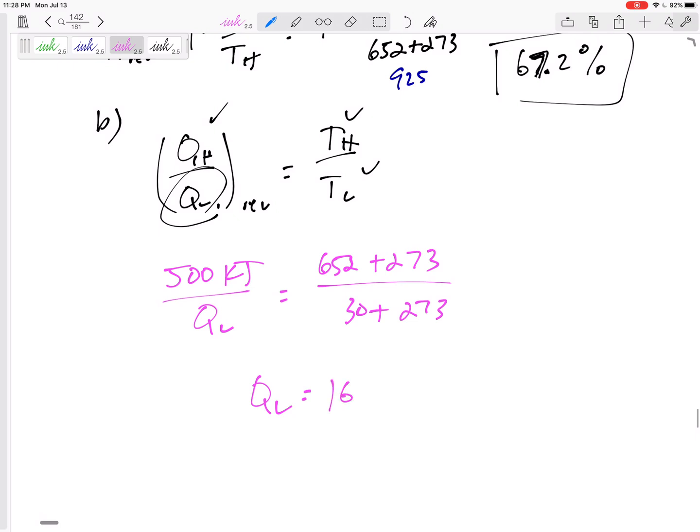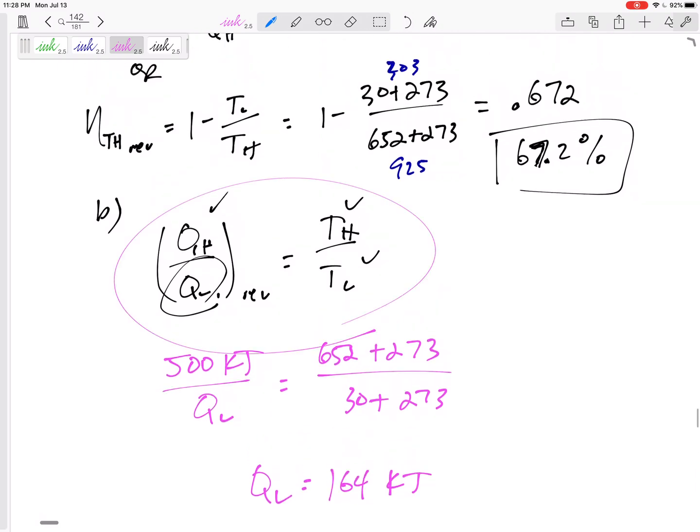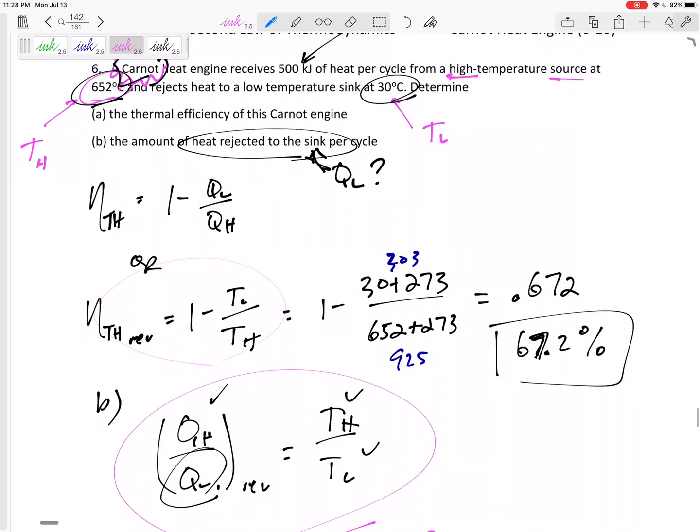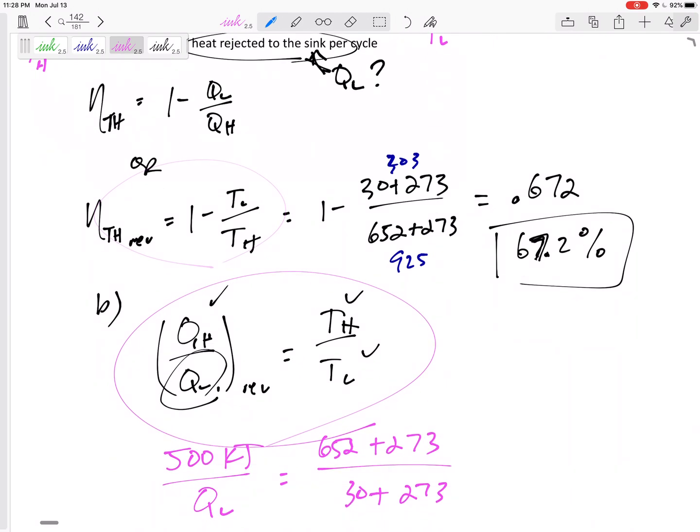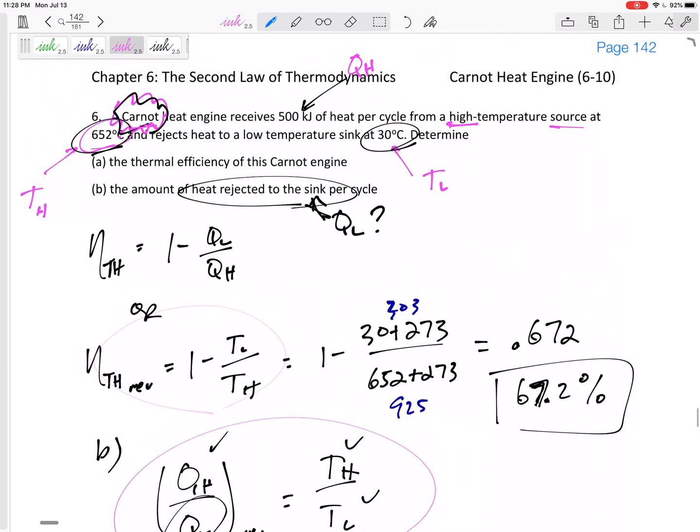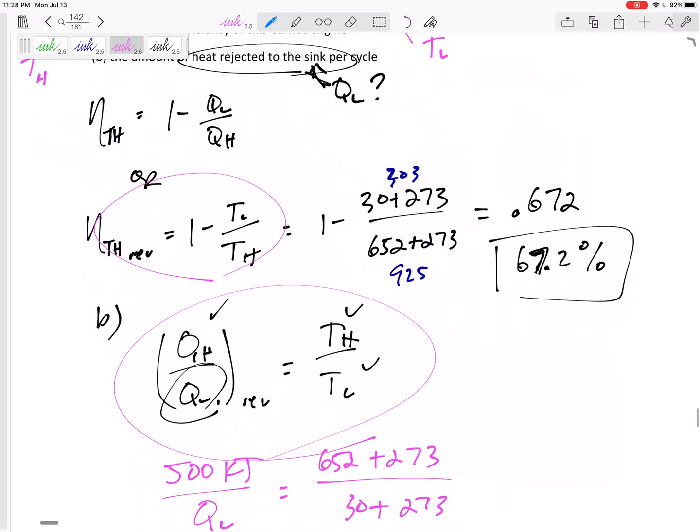So we've got another couple of equations that we can use if it says it's reversible, or if it says it's the absolute best, or if it says it's a Carnot, which is what this one did. This one told us it was a Carnot heat engine. All right, thank you.